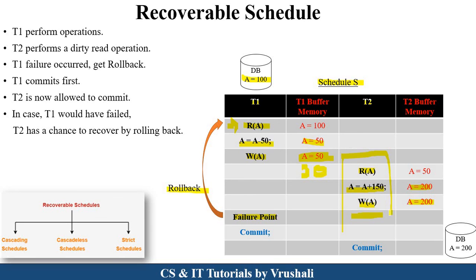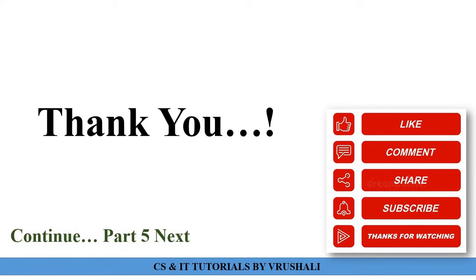So recoverable is decided before commit. If you perform a commit operation, it is not recoverable. When you have still not performed commit, you can recover and change the information. In a recoverable schedule, when T1 performs commit and after that T2 performs commit — because T2 is dependent on T1 and reads A from T1 — T1's commit confirms the operation is permanently stored in the database, and then T2 performs commit. So this is called a recoverable schedule. This recoverable schedule has three types: cascading, cascadeless, and strict schedule, which we will discuss in the next part. Thank you, keep learning.